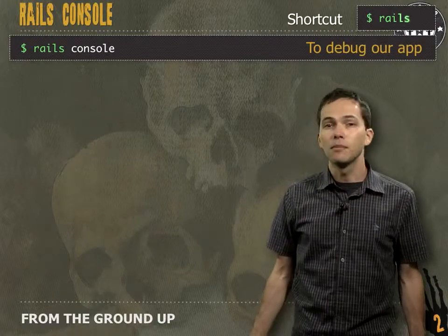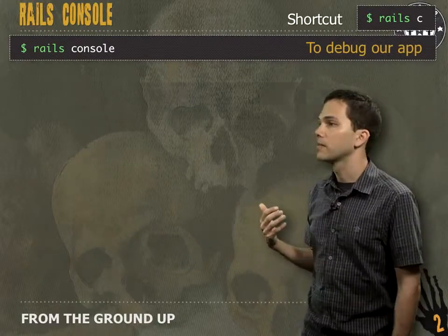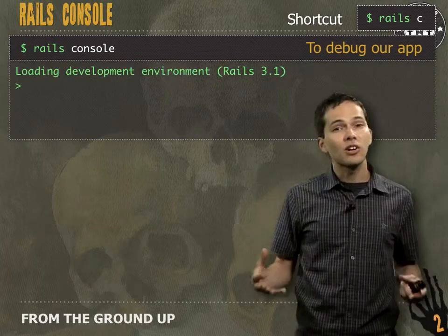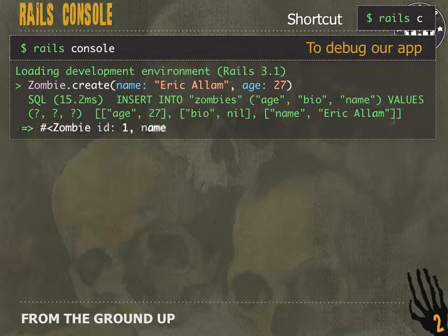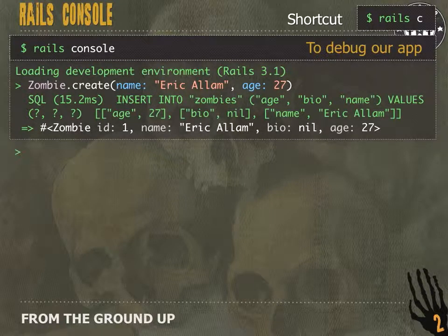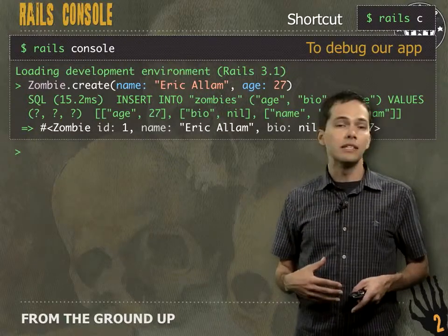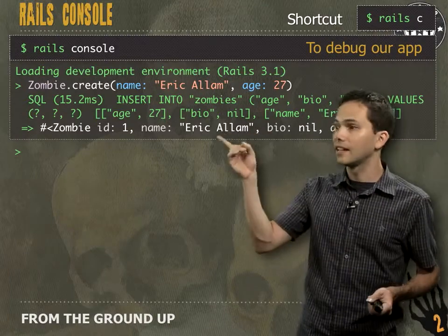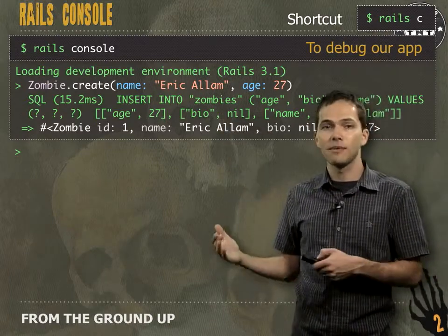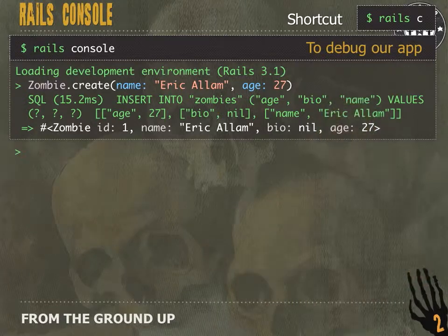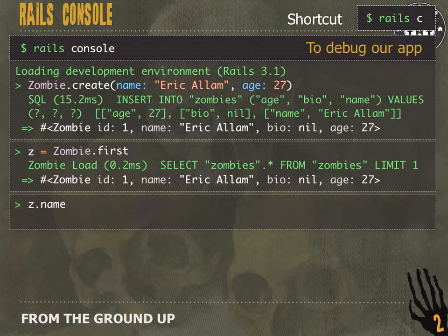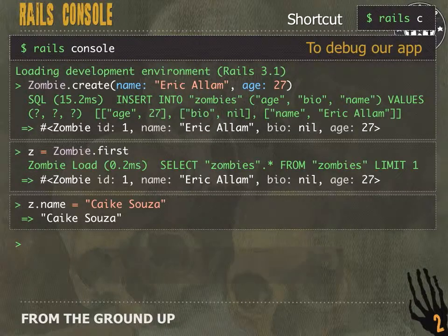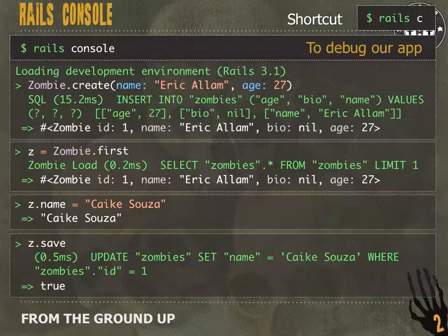Now that we have a zombie table and a zombie model, let's jump into the console and play around with it. We use the console to debug our application and run Rails commands. Here you can see I'm running `Zombie.create(name: 'Eric Allum', age: 27)`. That shows us the SQL being run and returns the zombie object created. We can then run `Zombie.first` to get back the first zombie, change the name, and then save it. It returns `true` because it successfully saved.